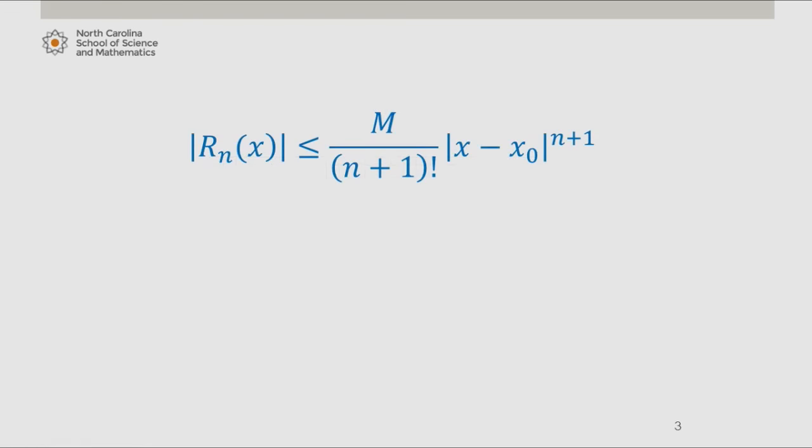On the interval 0 to 0.5, the absolute value of this is largest when x equals 0. So the absolute value of the fourth derivative of f on the interval from 0 to 0.5 is less than or equal to 6. So let's let M equal 6.